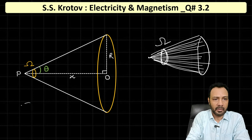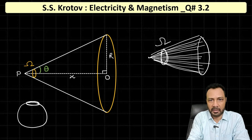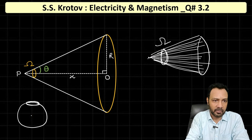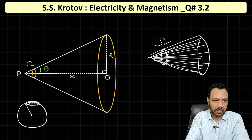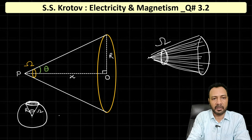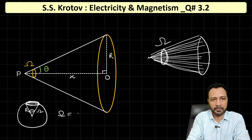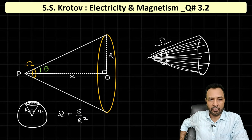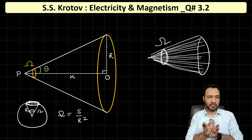Suppose I have a sphere, and I take some surface area of the sphere and join all points of that surface to an external point P, forming a solid angle. If the radius of the sphere is r, then the solid angle omega is defined as the area s of that part of the sphere divided by r squared: ω = S/r². The unit of solid angle is the steradian. This is the 3D angle.